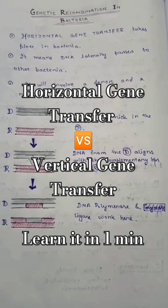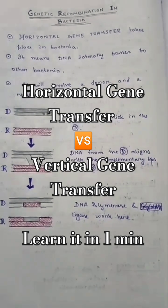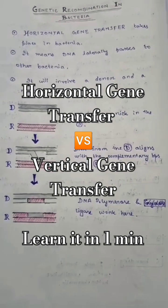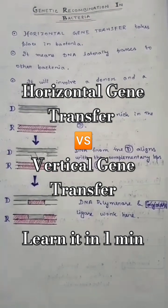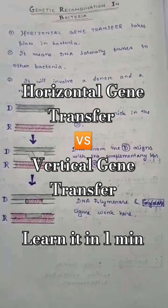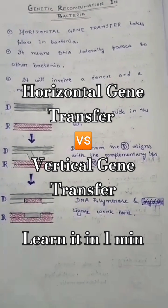The donor cell gives a portion of DNA to the recipient cell, and the recipient cell is going to receive it.